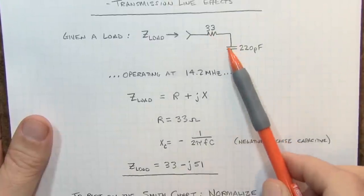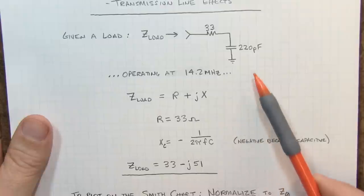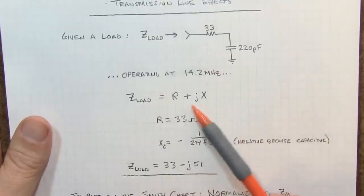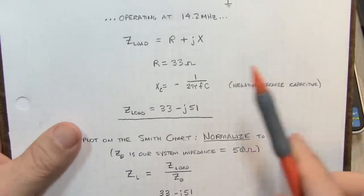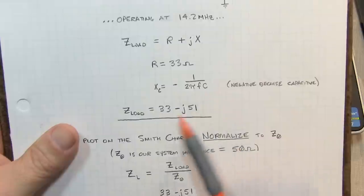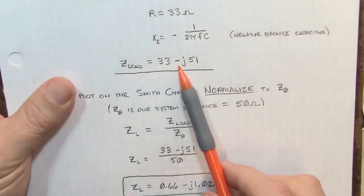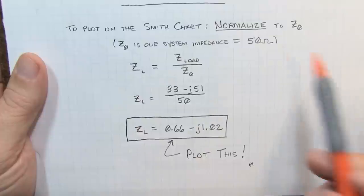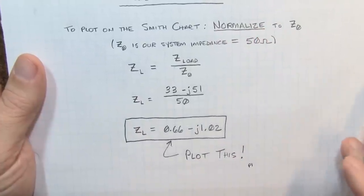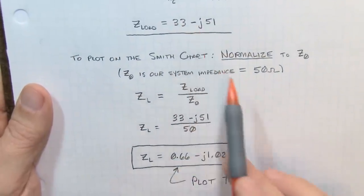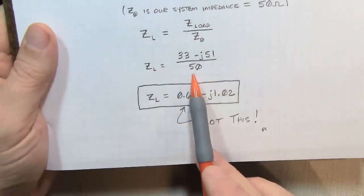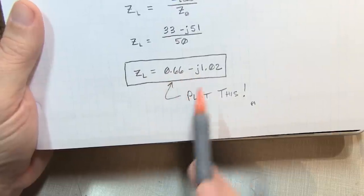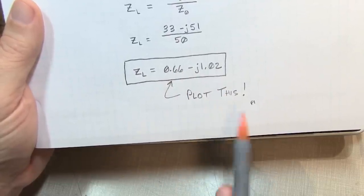For our example, let's start with a load that looks like a 33 ohm resistor followed by a 220 picofarad capacitor operating at 14.2 megahertz. We can convert this to R plus JX format by converting the 220 picofarads to its capacitive reactance, and we wind up with a load impedance of 33 minus J51. In order to plot this on the Smith chart, we need to normalize to Z0, so we divide by 50 ohms, giving us 0.66 minus J1.02.